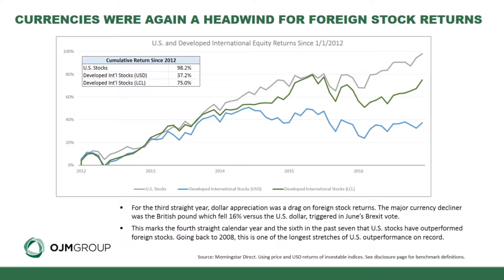The major decliner was the British pound, most of that relating to the summer months when the Brexit vote passed and the announcement was made — we saw a huge sell-off in the British pound compared to the US dollar. This is now the fourth straight calendar year, and six of the last seven going back to the financial crisis, that US stocks have outperformed foreign stocks — one of the longest stretches of US outperformance on record, intensified by the increase in the US dollar.